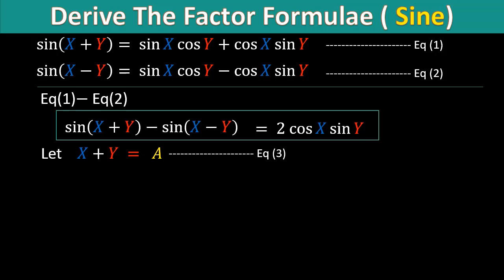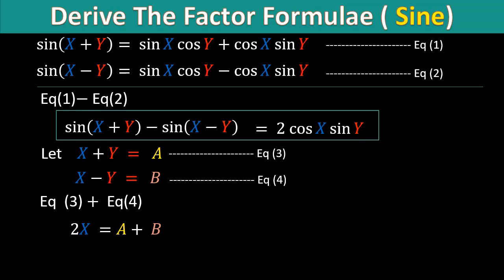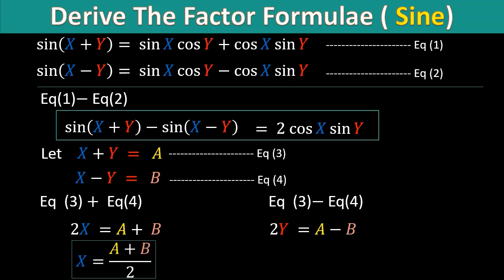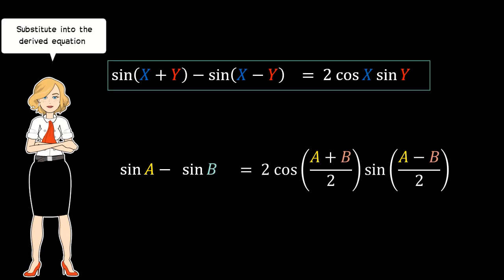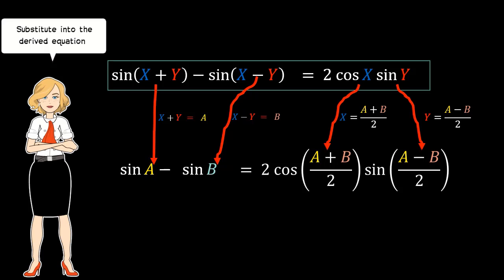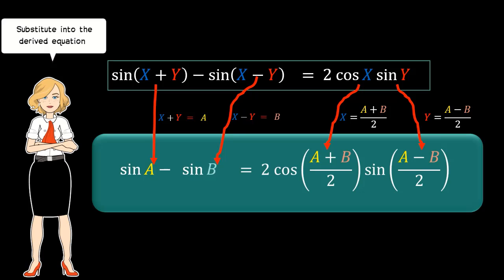We let x+y equal to a and x−y equal to b, and we solve equations 3 and 4. We will have x equal to (a+b)/2 and y equal to (a−b)/2. We proceed with the substitution process for the derived formula, giving us our second Factor Formula for sine.